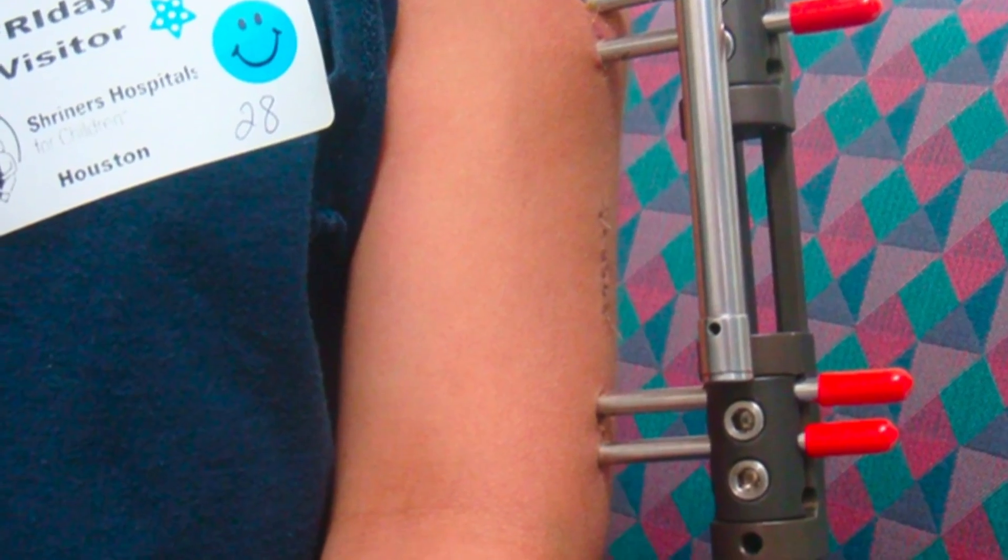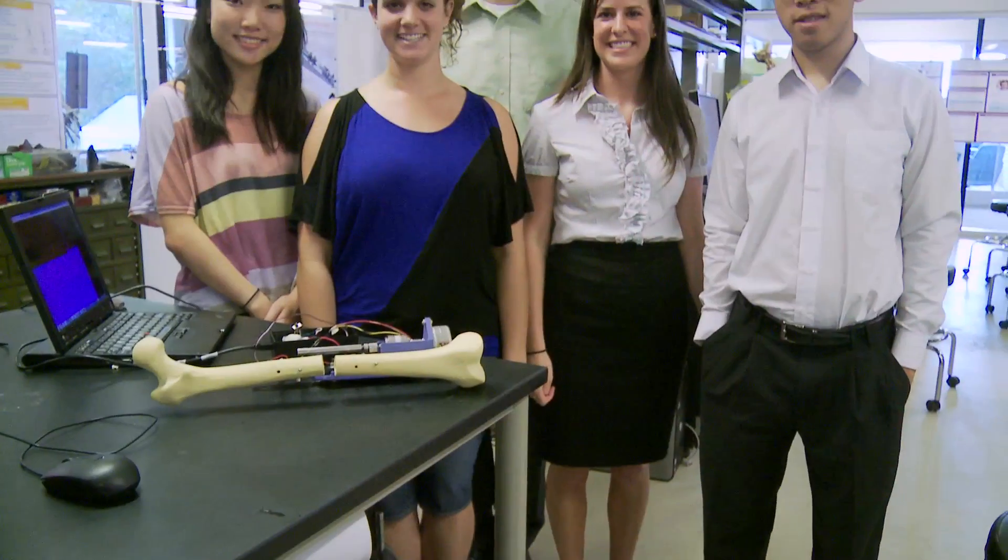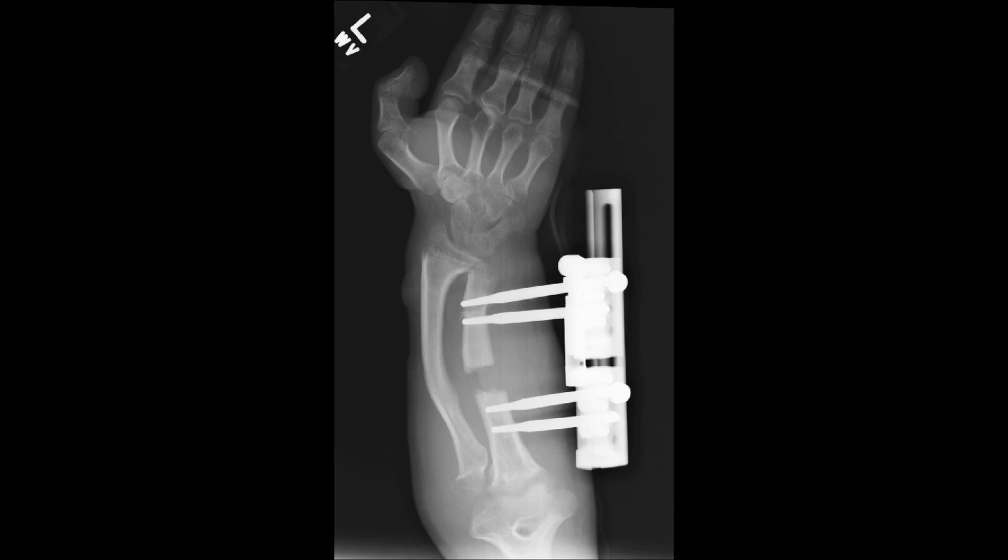The current procedure for doing that is called linear distraction. We are team Break and Make, and Break and Make comes from the process of making the bone longer. You surgically fracture it, you break it, and then you make it longer by slowly pulling it apart.